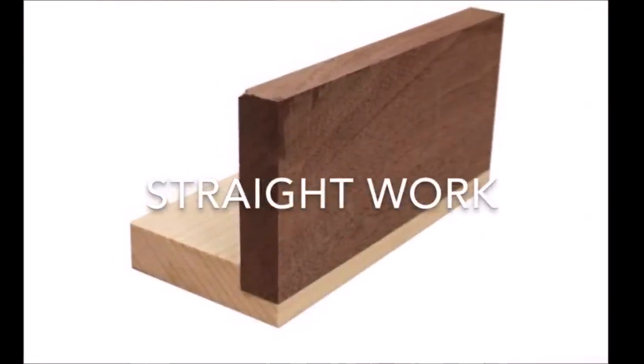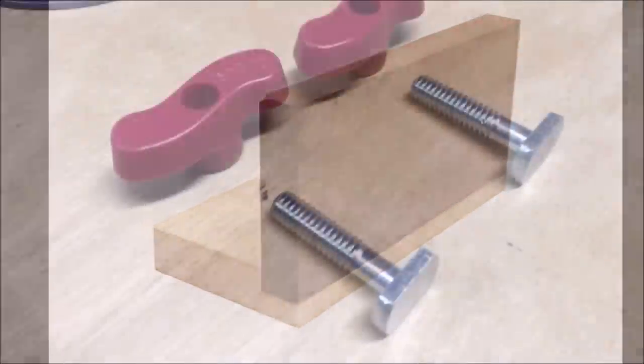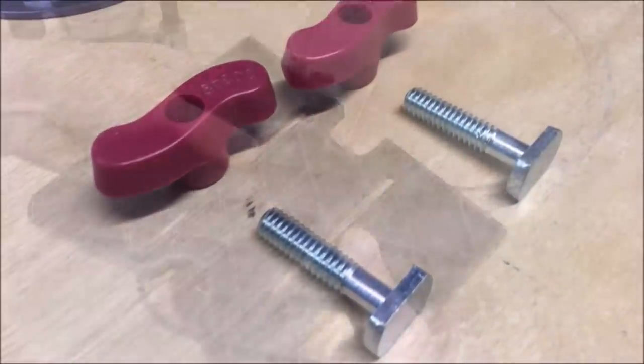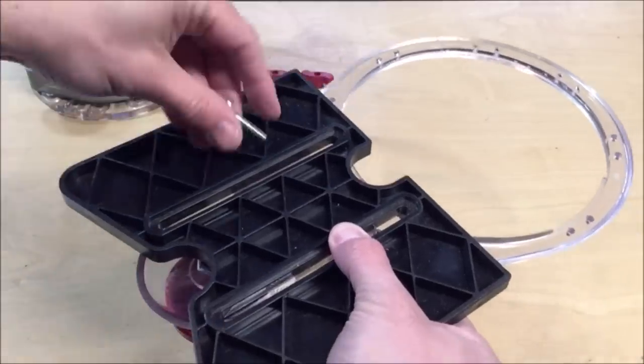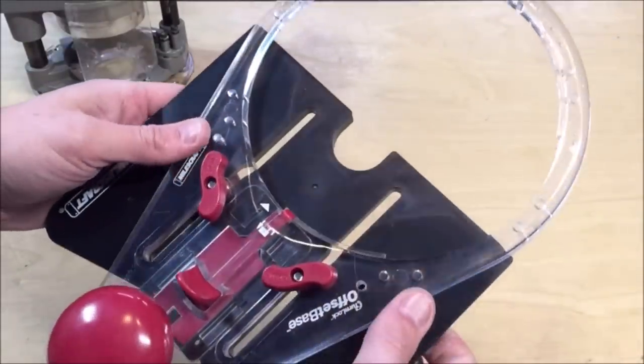To route grooves, dados, and rabbets, you will need to attach the offset base to the guide using the supplied hardware. The maximum routing travel from the bit to the edge of the material is 5.5 inches. This will vary depending on the diameter of the bit you are using.